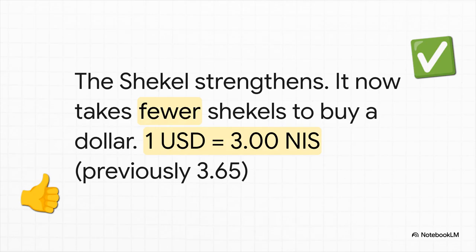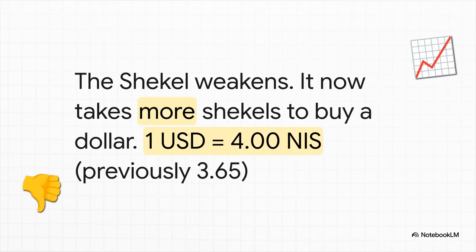Let's stick with our example. For appreciation, imagine the shekel strengthens — suddenly that one US dollar doesn't cost 3.65 shekels anymore; maybe it only costs 3.00. You need fewer shekels to buy that same dollar, so your money just got more powerful. Depreciation is the exact opposite: if the shekel weakens, that rate might jump up to 4.00. Now it takes more shekels to get that same single US dollar — your currency is weaker, at least compared to the dollar.